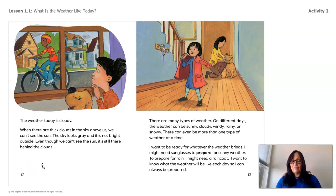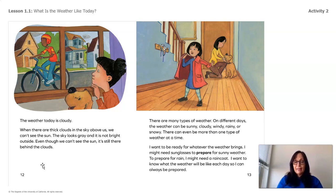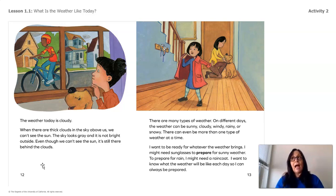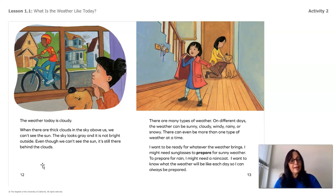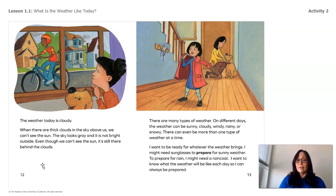I want to be ready for whatever the weather brings. I might need sunglasses to prepare for sunny weather. To prepare for rain, I might need a raincoat. I want to know what the weather will be like each day so that I can always be prepared. That is one of the reasons I look outside my window when I wake up in the morning — I need to know what to wear before I go outside. If it's snowing, I can't be wearing shorts; I have to wear long pants, a jacket, and mittens. Whatever the weather is like, that's how we get dressed, just like the girl in the story.